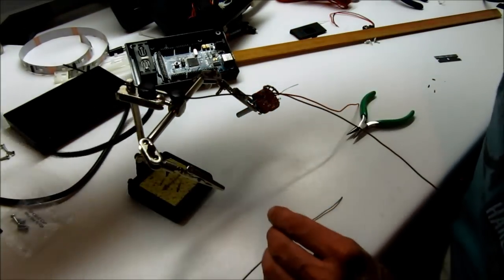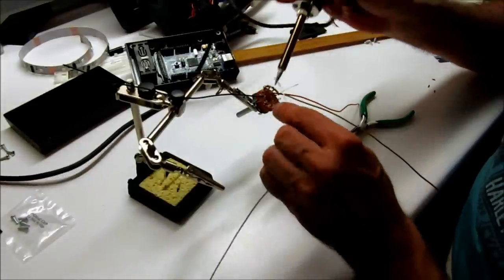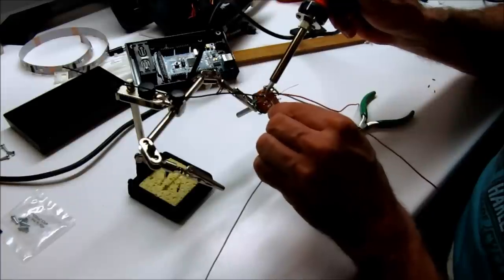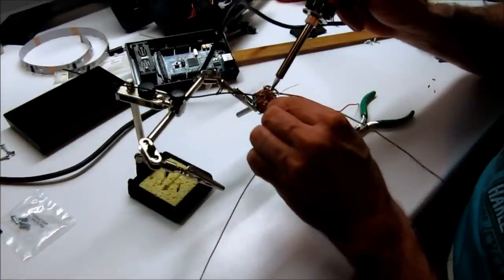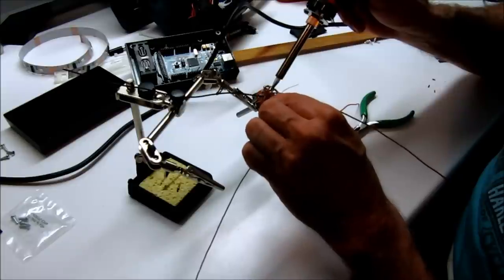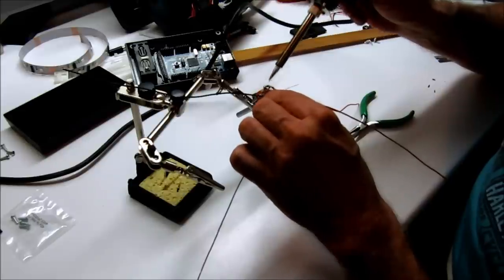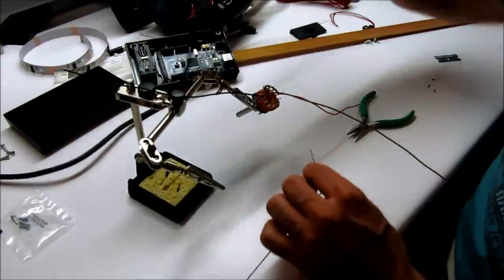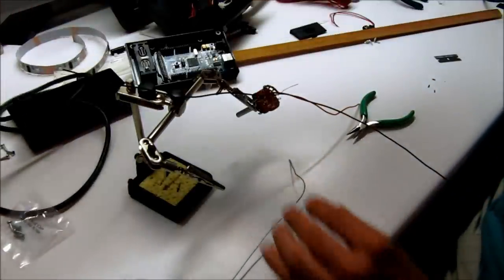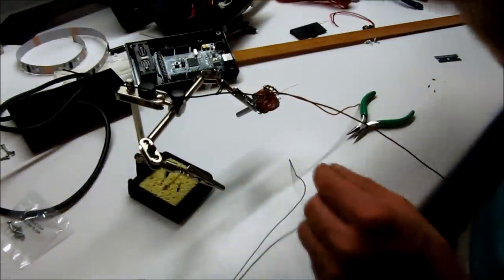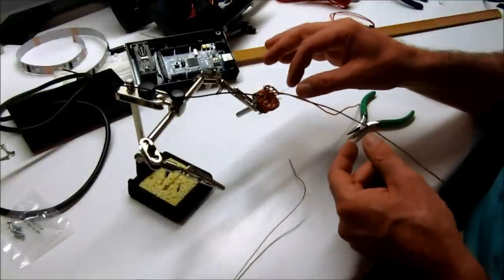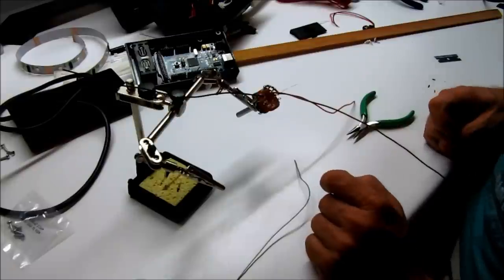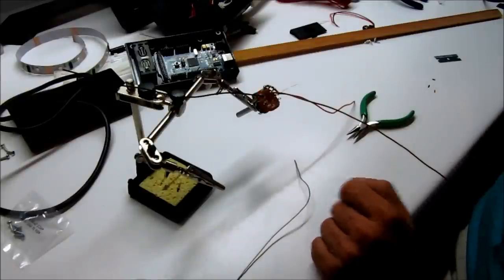So I'm going to go ahead and solder these and cut the excess resistor leads off here, and we'll be ready to drill the hole and mount our switch into the project box.